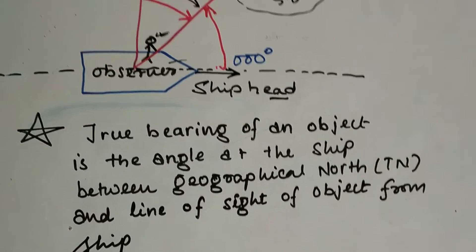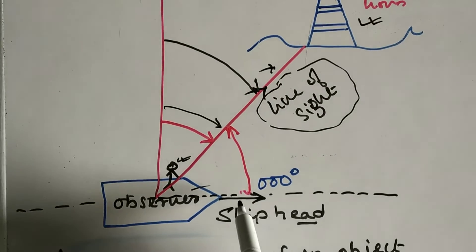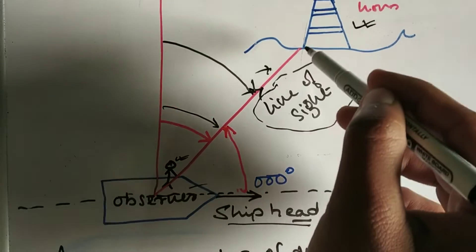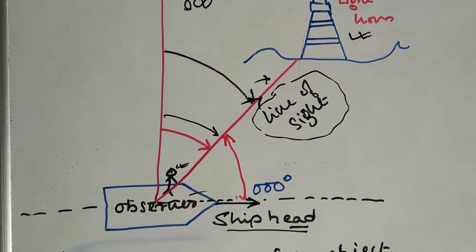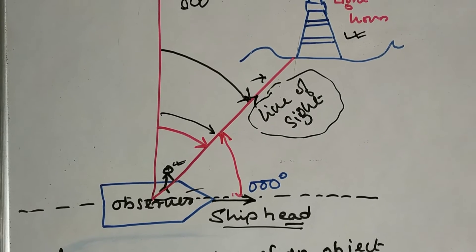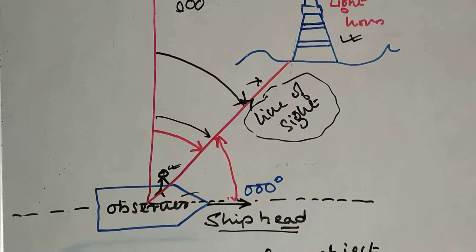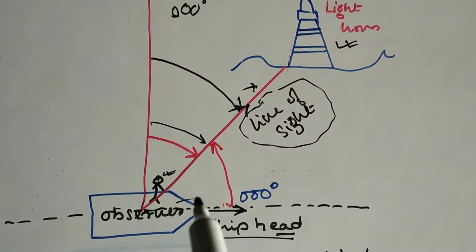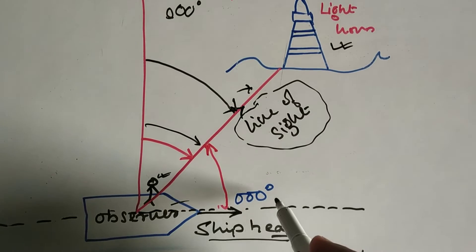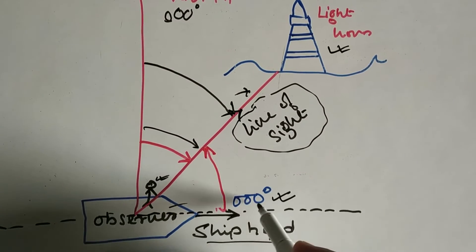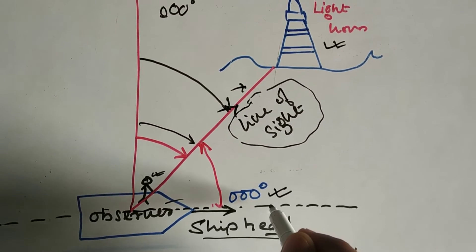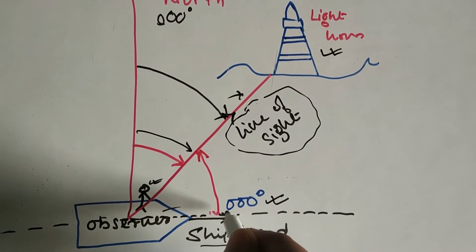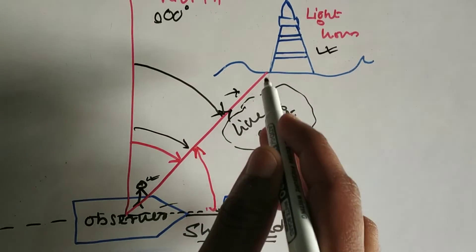Now we will see what is relative bearing. The ship's head direction and the line of sight of the object from the ship are used. Relative bearing is the angle at the observer, or the angle at the ship, between the ship's head — where 000 degrees is the ship's head — and the line of sight of the object from the ship.